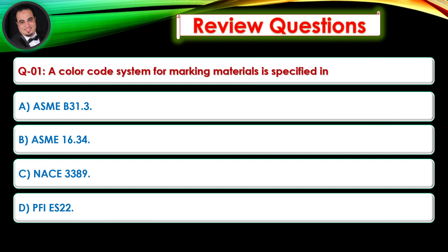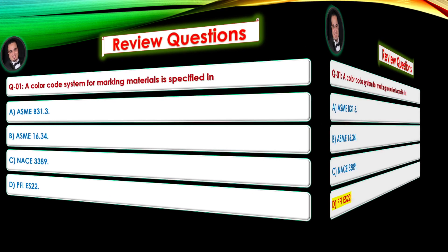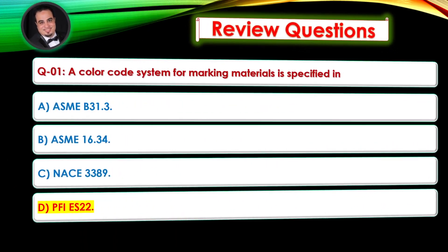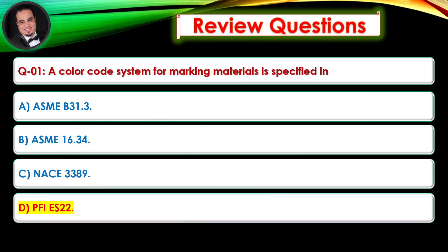Review questions. Question number one: A color code system for marking materials is specified in — Answer is D.